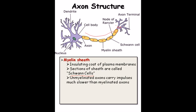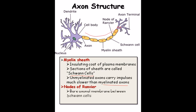Unmyelinated axons carry impulses much slower than myelinated axons. But why is the whole axon not covered with the myelin sheath? If it is totally covered, the large impulse flow is disrupted. As a result, there is a pattern: myelin sheath, then a gap, then myelin sheath again. This structure helps the impulse flow rapidly — fast then slow, fast then slow. The free gaps between two myelin sheath regions are called the nodes of Ranvier, and they bear the bare axonal membrane between the Schwann cells.